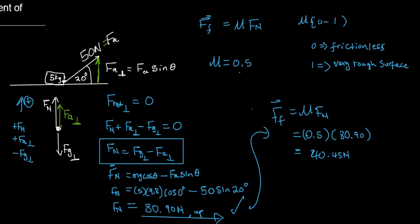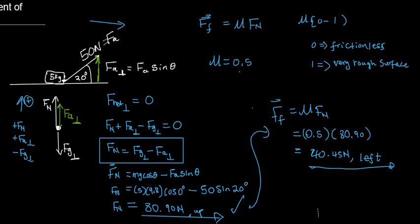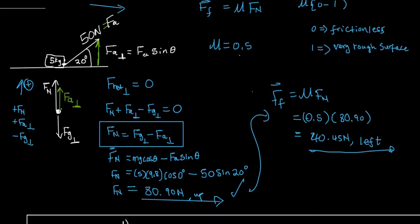The direction of the frictional force depends on where the applied force is. In this scenario, the applied force is towards the right, so the frictional force will therefore be to the left. The frictional force will oppose the applied force — or rather, it will oppose the resultant force.